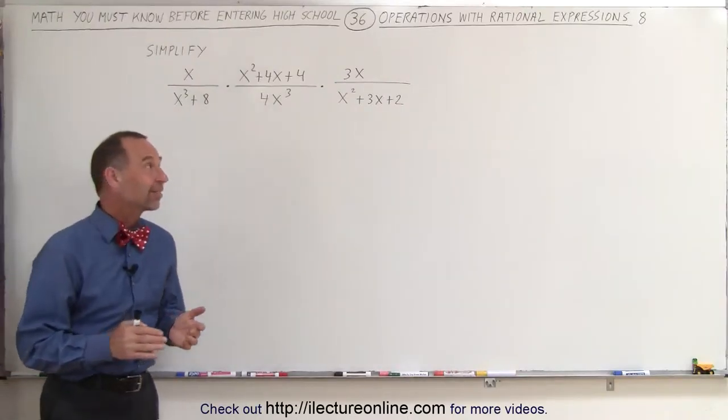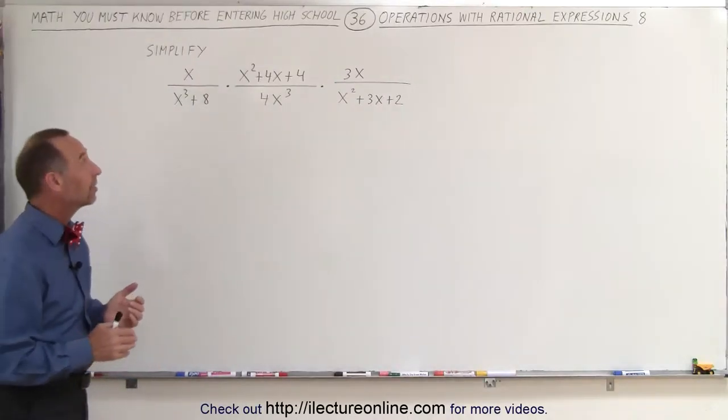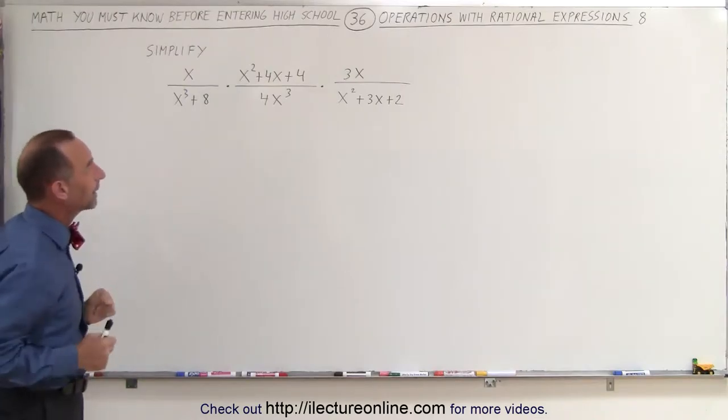Welcome to ElectronLine. Here our next example is a quite complicated example. We have three rational expressions multiplied together.